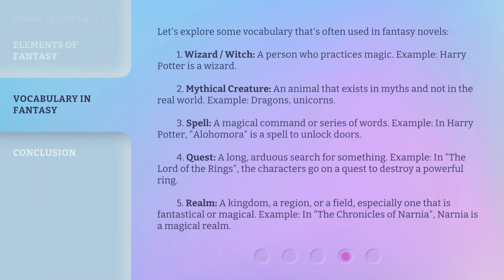Let's explore some vocabulary that's often used in fantasy novels. First, wizard or witch — a person who practices magic. Example: Harry Potter is a wizard. Second, mythical creature — an animal that exists in myths and not in the real world. Examples: dragons, unicorns.